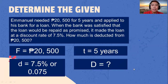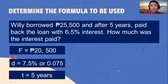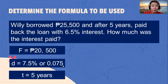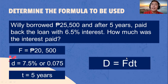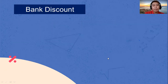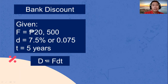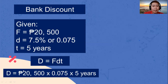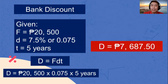The time is 5 years and we are going to look for the discount. Since we have the maturity value of 20,500, discount rate of 0.075, and time of 5 years, we multiply them together to get the bank discount. Substituting: bank discount equals 20,500 multiplied by 0.075 multiplied by 5 years. The bank discount is 7,687.50 pesos.